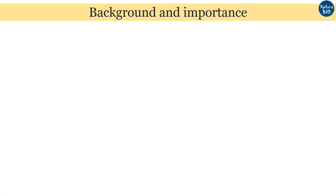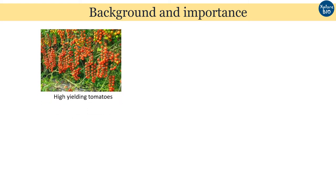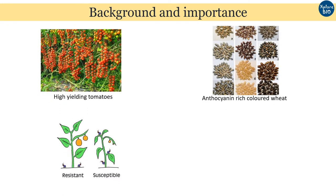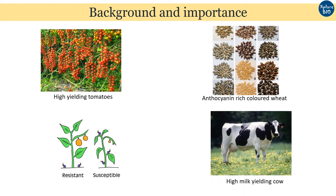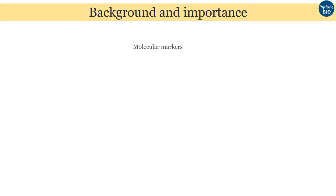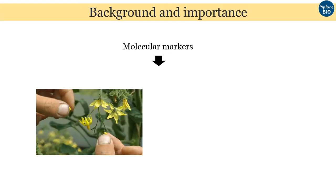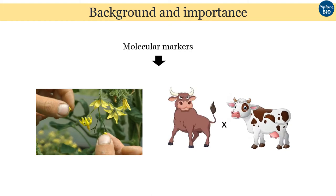First, I will give a brief introduction about what is the need of this technique. We humans have always wanted to develop crops with better yield, quality, and resistance against various diseases, and similarly better yield of milk or other animal-derived products. Molecular markers are one of the most important tools for breeding, selection, and genetic improvement of organisms including plants and animals.